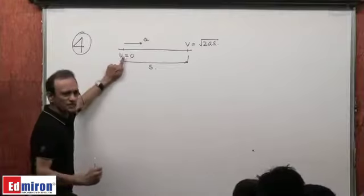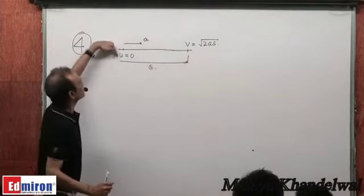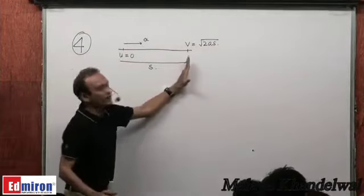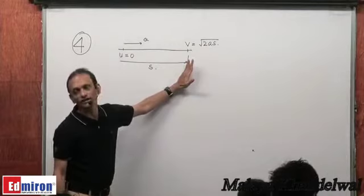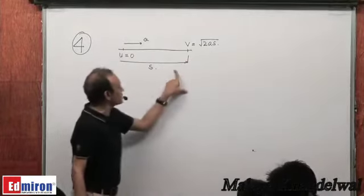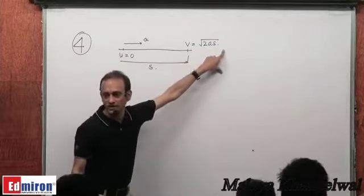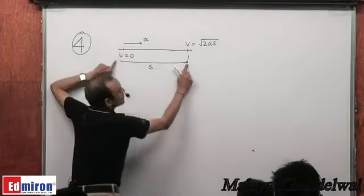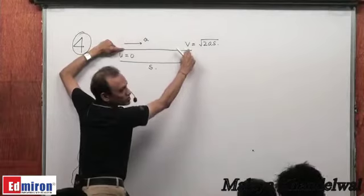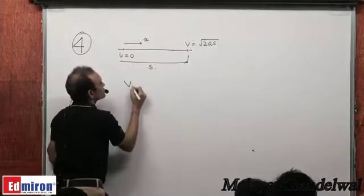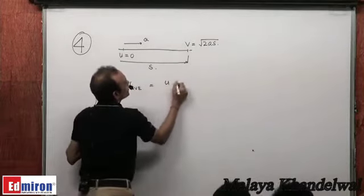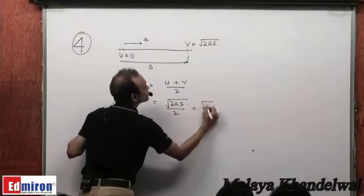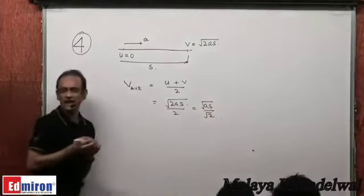A particle starts from rest moving along a straight line with initial velocity 0 and uniform acceleration a. We want to find the average velocity over a displacement s. After displacement s the velocity is √(2as). Since it's constant acceleration, average velocity over this interval is (u + v)/2 = (0 + √(2as))/2 = √(as)/√2.